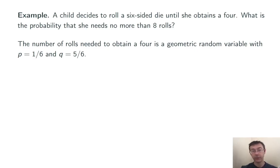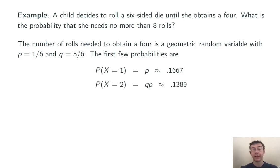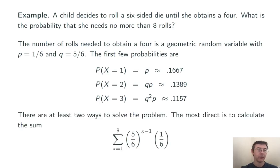And Q, 1 minus P, probability of failure, is 5/6. So the probability that X is 1 is just the probability of a success on the first roll. That's 1/6. The probability that X is 2 is the probability that you get a failure followed by a success. So Q times P, about 0.1389. And the probability that X is 3 is Q squared times P, two failures followed by a success.